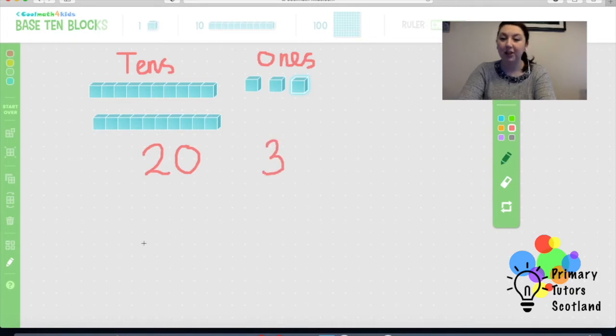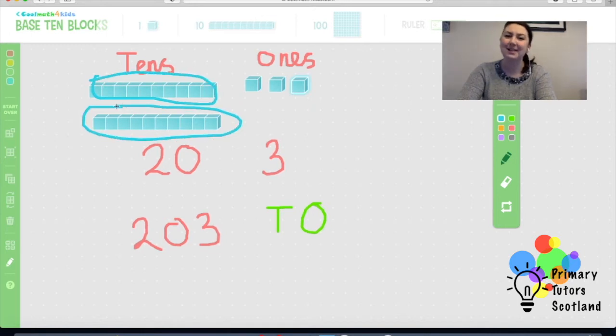Now why do I not write that number as this? Do you know? It's because I need to look at my place value. So we know that when we write a number we have a tens column and we have a ones column. Now this is why we do not do it like that. How many tens have I got? I've got this 10 and I've got this 10. How many is that? 2. It's only 2.